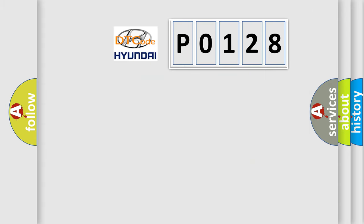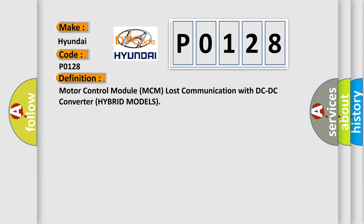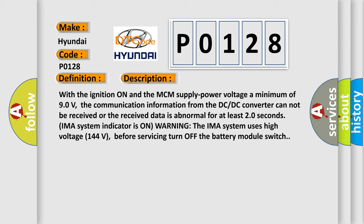What does the diagnostic trouble code P0128 interpret specifically for Hyundai car manufacturers? The basic definition is: Motor Control Module (MCM) lost communication with DC-DC converter — hybrid models. With the ignition on and the MCM supply power voltage a minimum of 90 volts, the communication information from the DC-DC converter cannot be received, or the received data is abnormal for at least 20 seconds. The IMA system indicator is on as a warning.